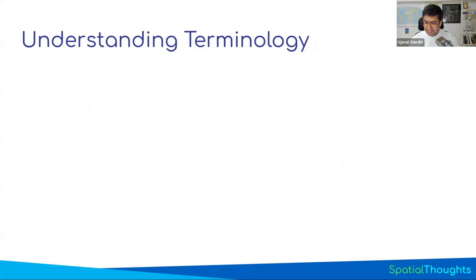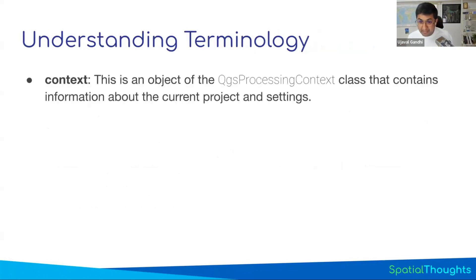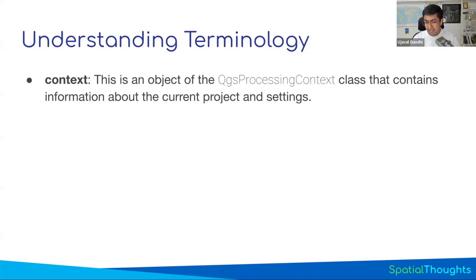When writing processing scripts, there is some terminology you'll encounter. You'll encounter a variable called context. All processing algorithms, when you say run, receive a context object. The context contains all the settings configured in a project - when processing tools are running, they need to know how to do validation, and there are default values set in the processing settings. All of those settings are passed as a context object. Most users don't need to worry about it - you just keep passing it on, and every algorithm that needs settings will ask the context for them.